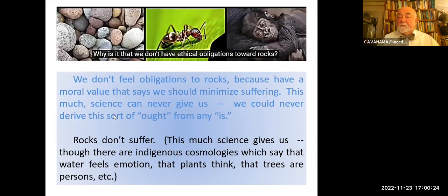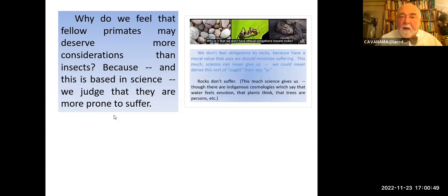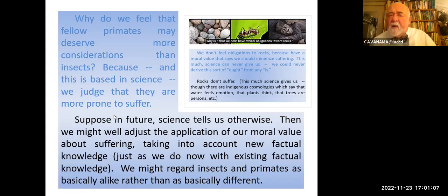Now back to our rocks. Rocks don't suffer — this much science gives. Though there are indigenous cosmologies which say that water feels emotion, plants think, trees are personal, etc. — but that's basically what we left behind with Thales and the pre-Socratics. Why do we feel that fellow primates may deserve more consideration than insects? Because, again based in science, we judge that they're more prone to suffering. So the preference for minimizing suffering doesn't come from science, but science could tell us some things about who suffers and to what extent. If in future science tells us otherwise, we might well adjust the application of our moral value about suffering, taking into account new factual knowledge, just as we now do with existing factual knowledge.